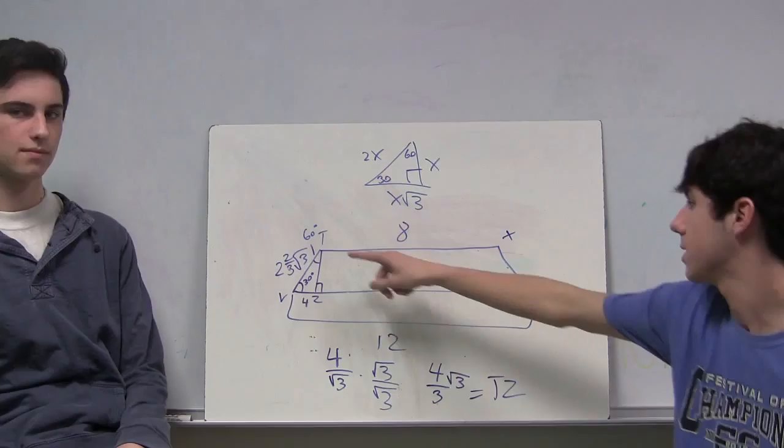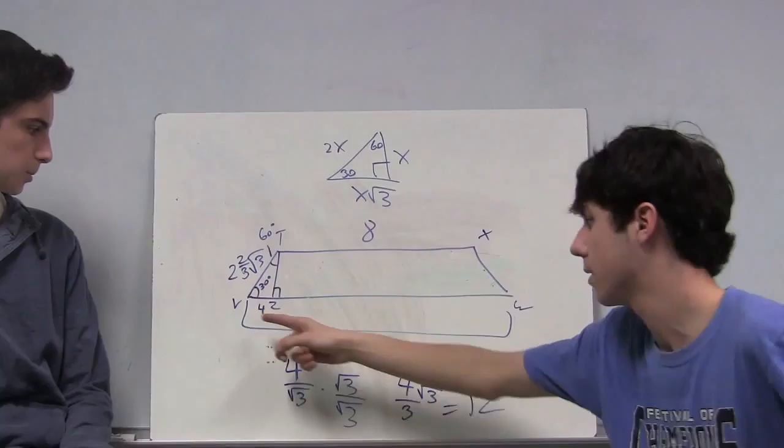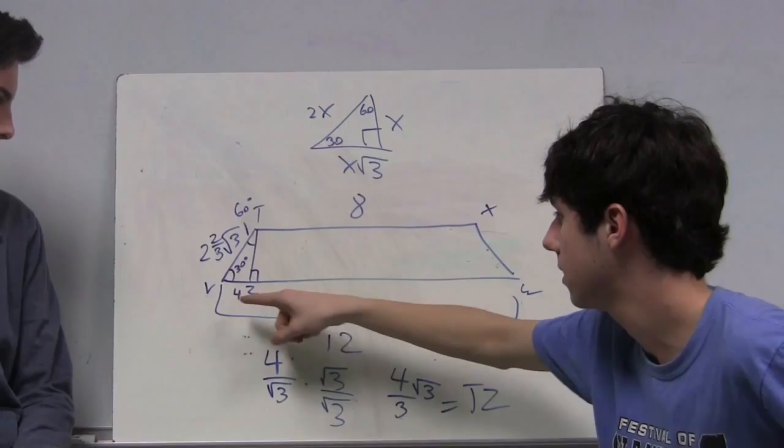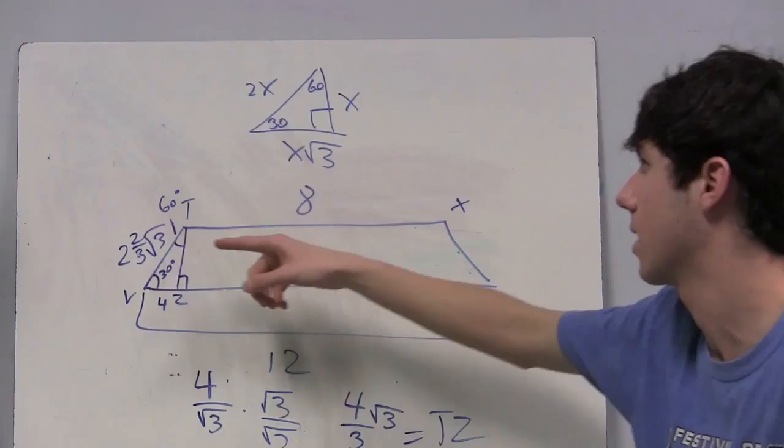Since we know that TX is 8 and VW is 12, we know that VZ is 4. Since TZ is perpendicular, this is a 90 degree angle. We know angle TVZ is 30 degrees, so angle ZVT is 60 degrees.